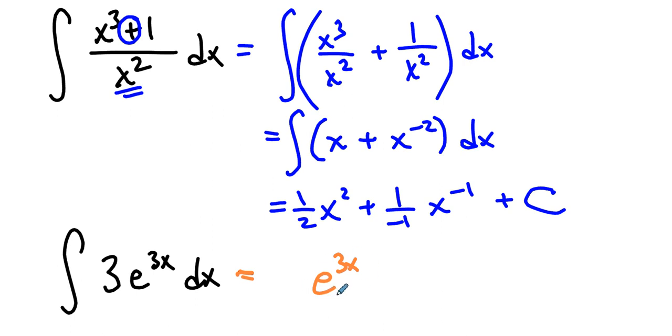The derivative of e to the 3x is e to the 3x times the derivative of 3x. This is all I need plus a constant.